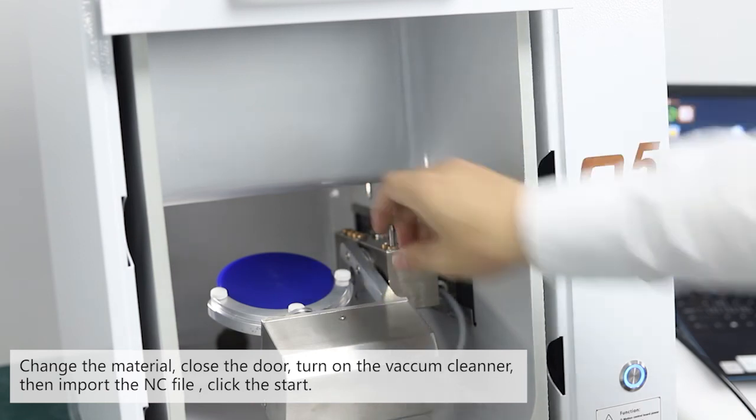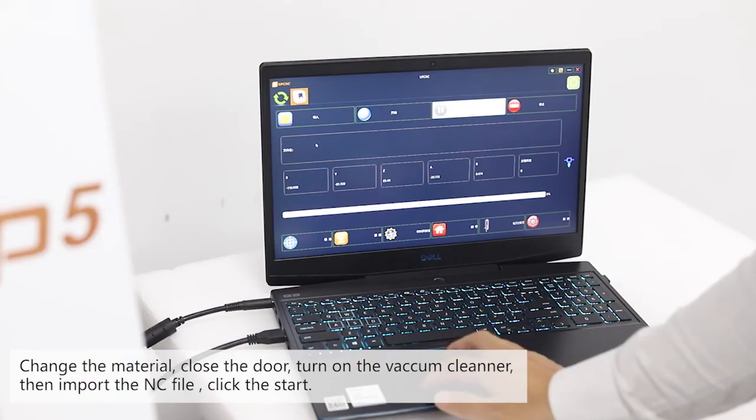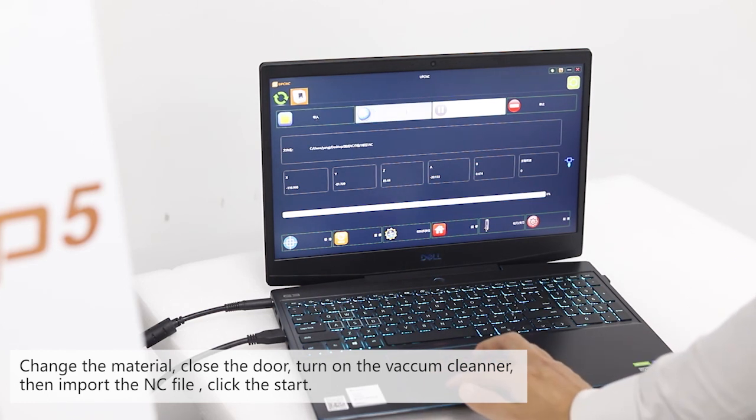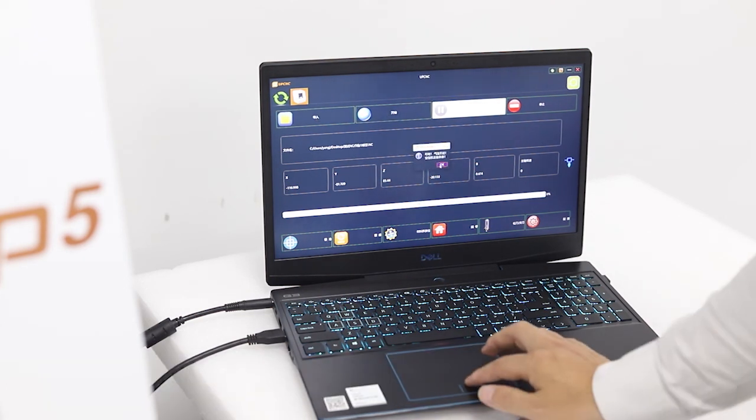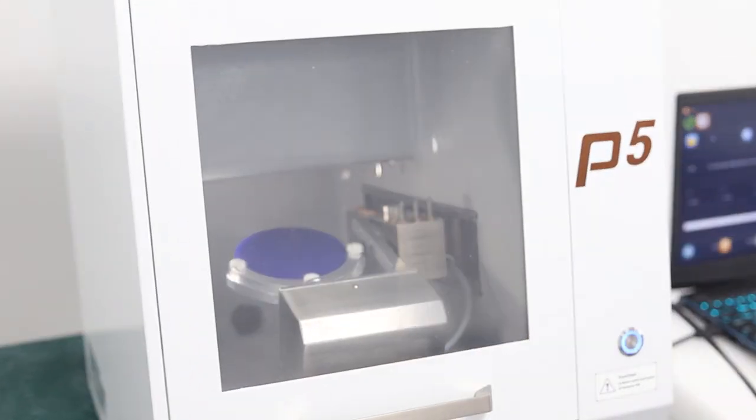Change the material, close the door, and turn on the vacuum cleaner. Then import the NC file and click start.